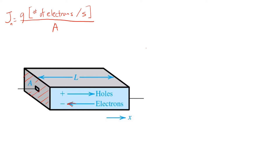So you end up with Coulombs per second per meter squared, and Coulombs per second is of course amps.